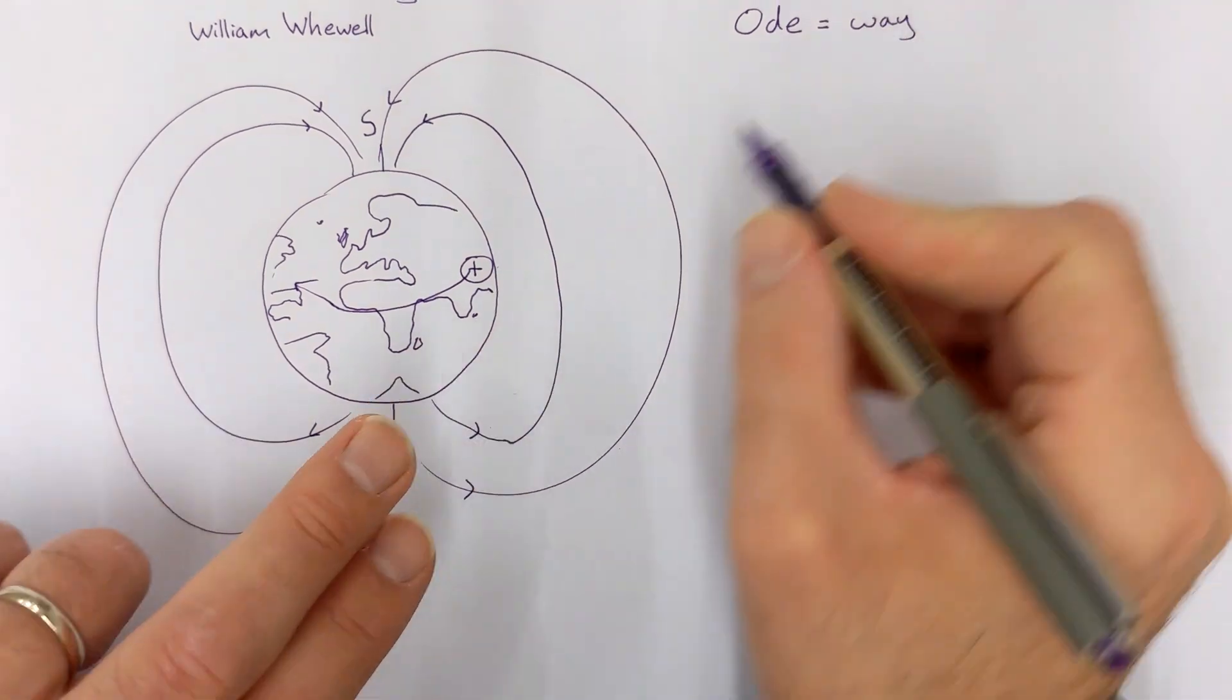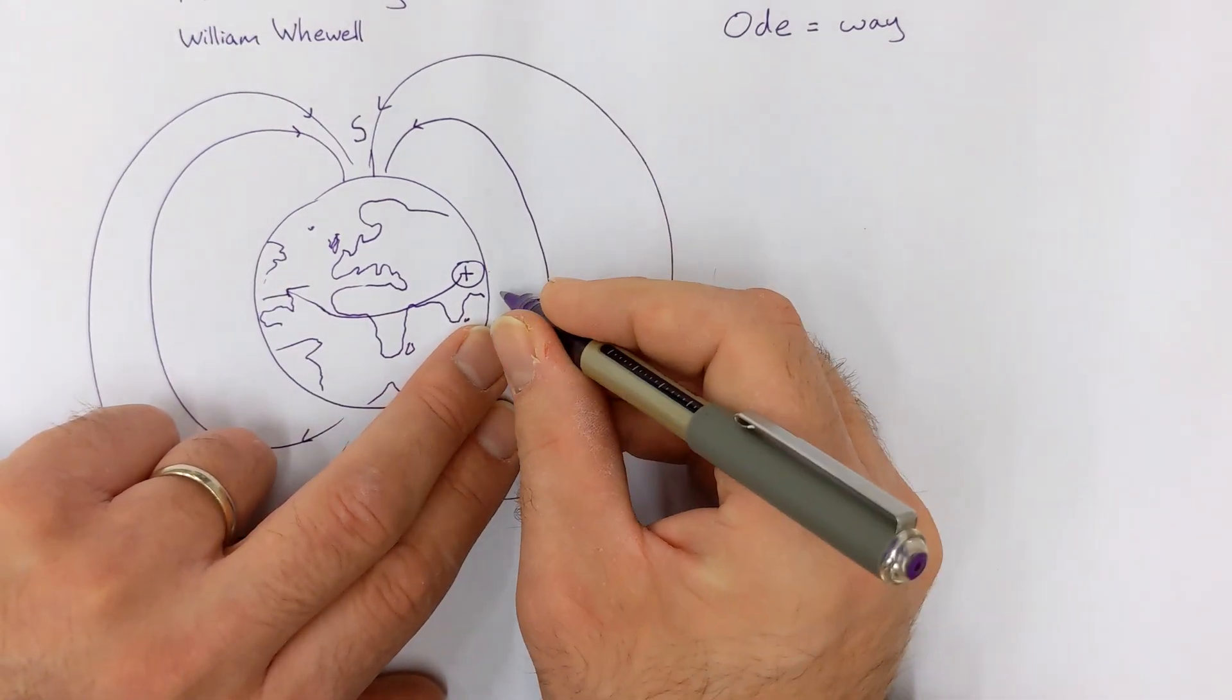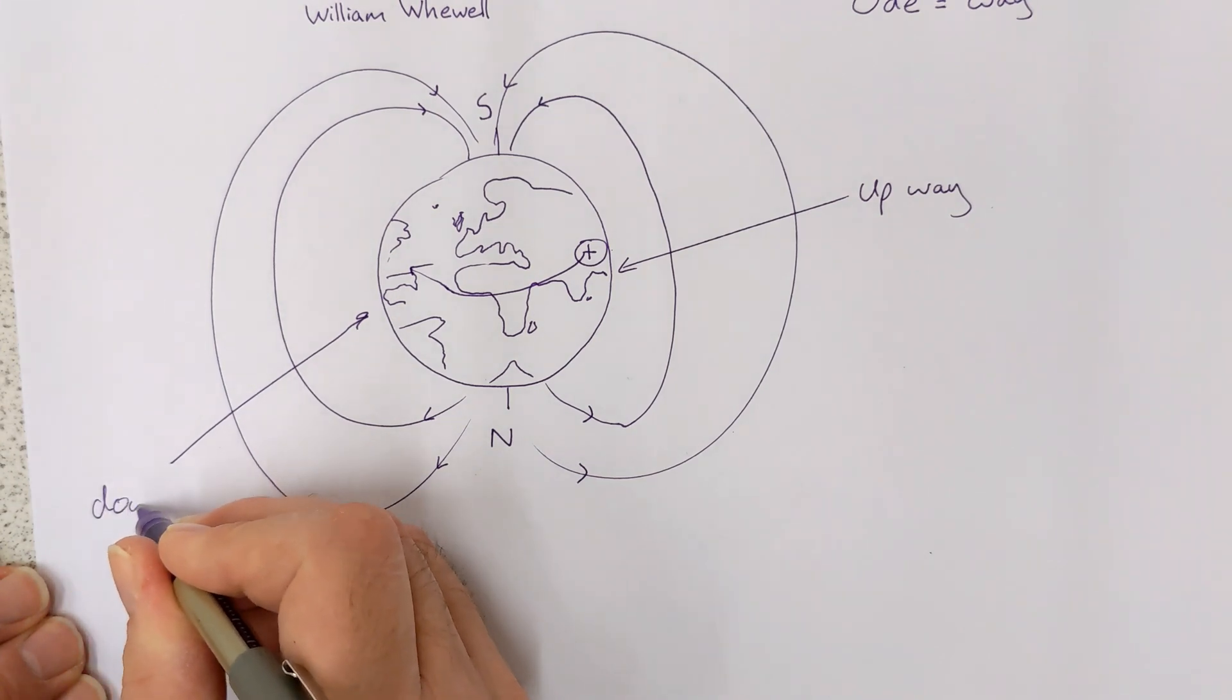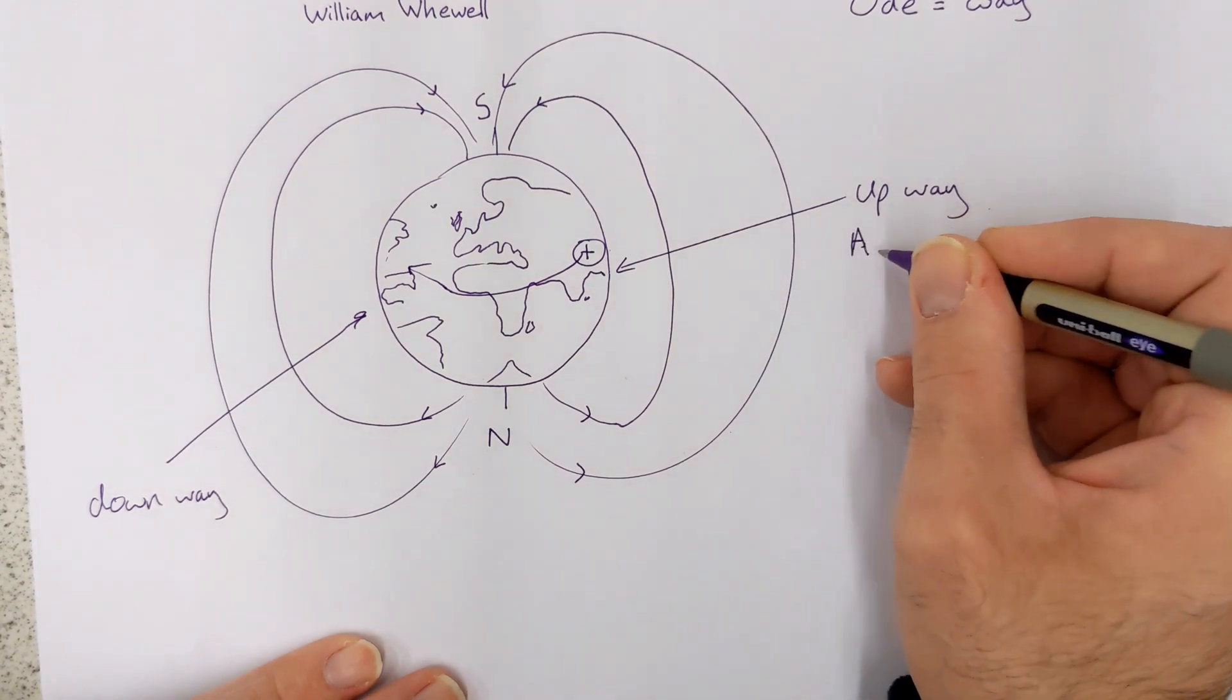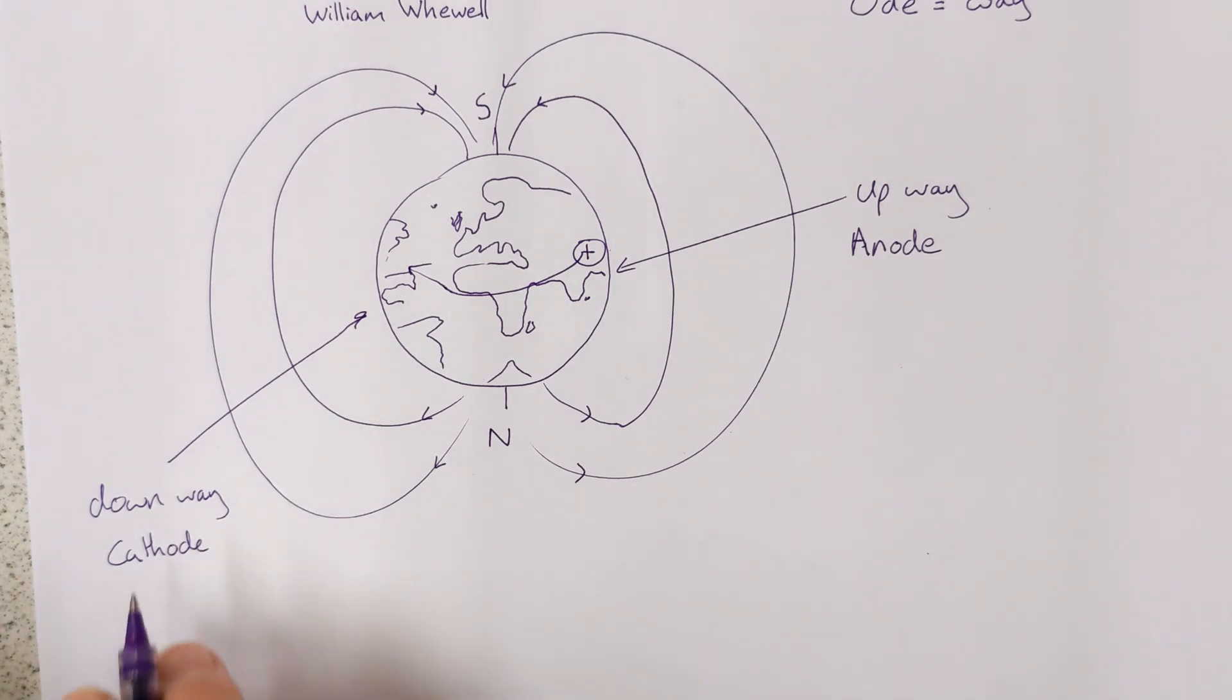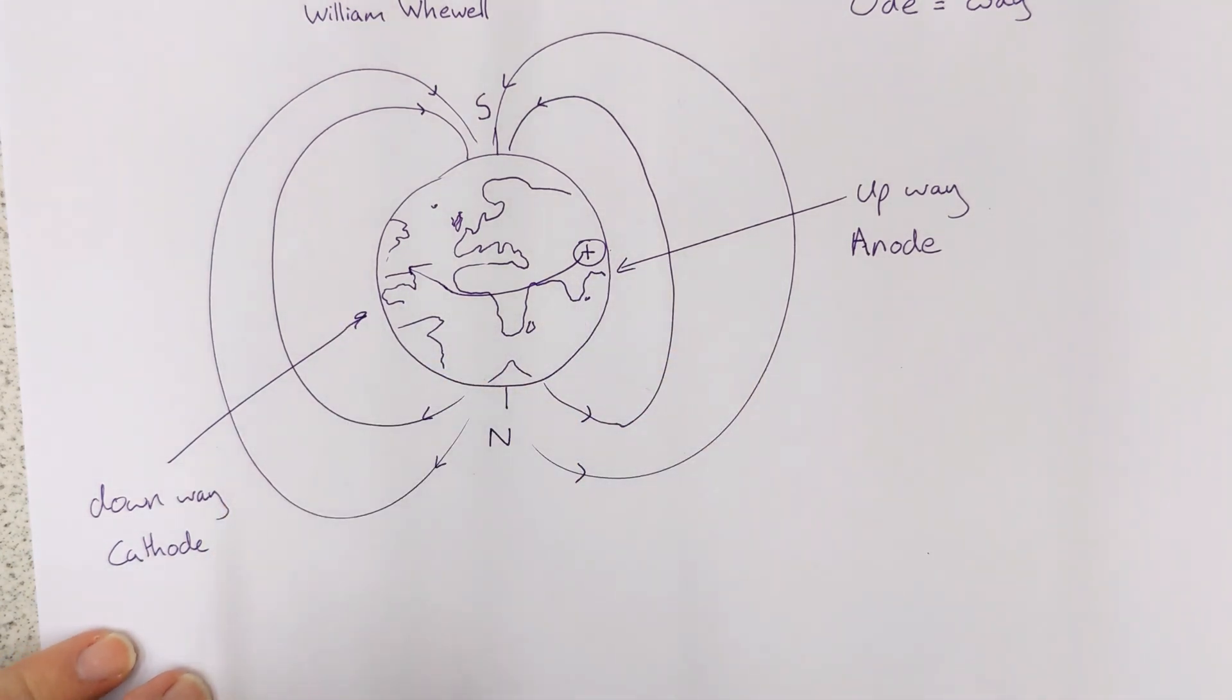So rather than saying east way and west way, it started being called up way and down way. So this part over here became the down way. The Greek for up is anos or anus or something like that. I'm not very good at Greek. But anode became the up way, and cat, or cathode, became the down way, from catus. So what we've now got is the definition of anode and cathode in terms of the movement of the sun perceived from the surface of the earth.